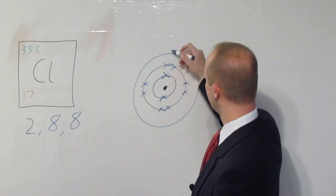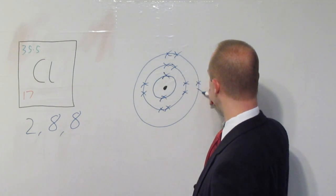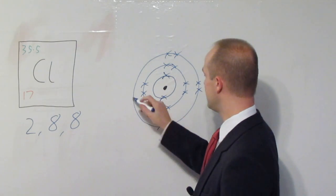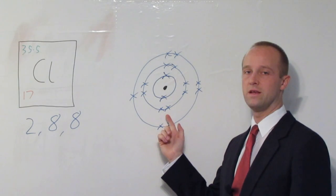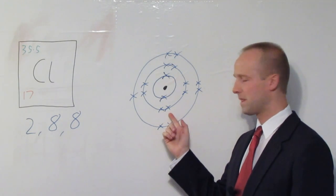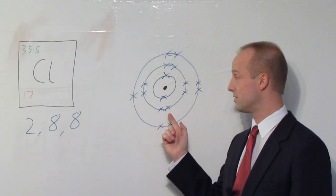Still some left. 11, 12, 13, 14, 15, 16, 17. Notice, by the way, as you get to the shells that are further out, we tend to draw the electrons in pairs just because it makes them easier to count.